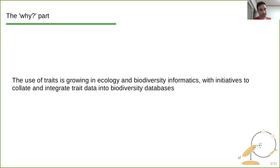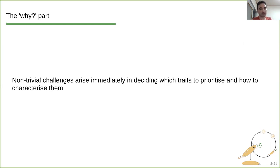The use of traits is growing in ecology and biodiversity informatics, and there are many initiatives to collate and integrate data into biodiversity databases. With this need that has arisen in recent times, there are non-trivial challenges that arise immediately when we are deciding which traits we should prioritize and how to characterize them. Like some of the questions that we might ask: should we be looking at individual scale data and observations or population scale or whole communities ecosystems, how to standardize data between databases, just generally what we should measure and put into such databases.